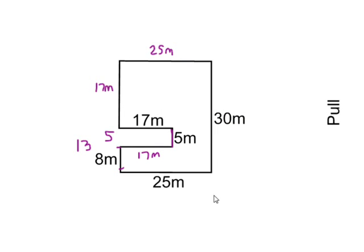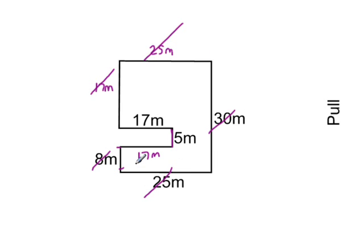Again, if I wanted to find the perimeter of this, it's a good idea to cross these out. You would add 17 and 25 and 30, 25, 8, 17, 5, and 17 to find the perimeter of this composite shape.